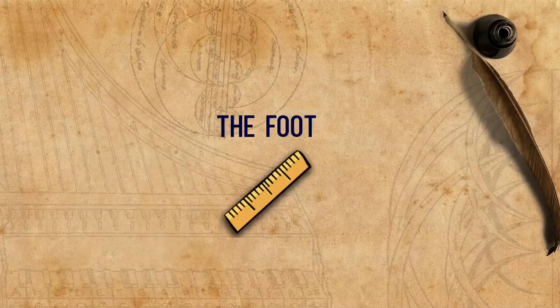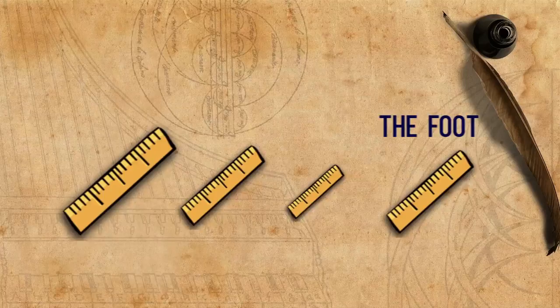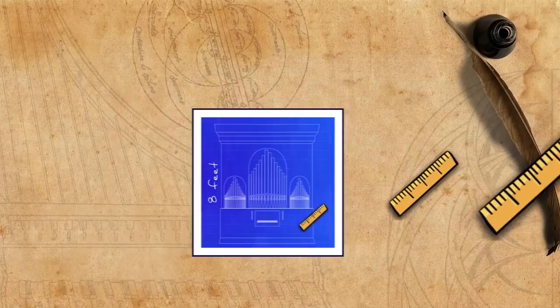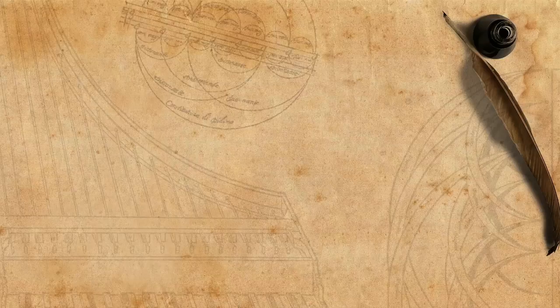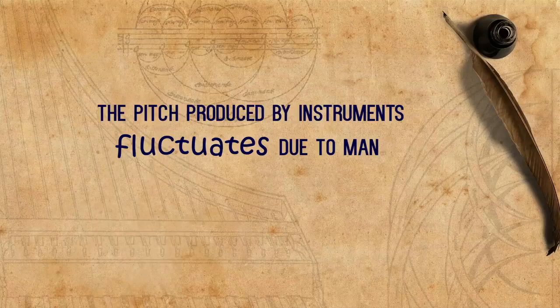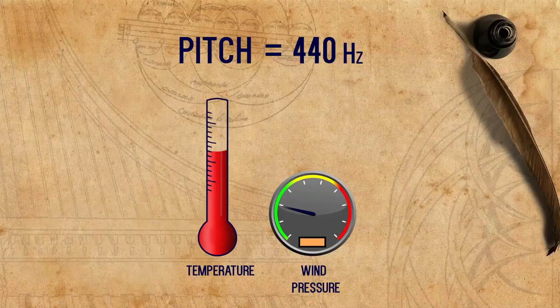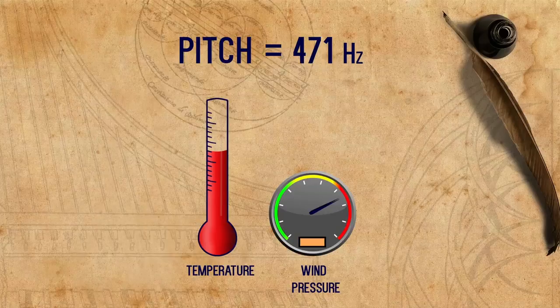Another unit of measure that was far from being standardized is the foot. It was different from city to city throughout Europe, and sometimes even within one city. This caused organs, for example, even if theoretically planned to be identical in their measurements, to be slightly different in size and therefore in pitch. But even if there had been a global measure for the foot or other measuring units, the pitch produced by instruments fluctuates due to many different factors. In organs, and in fact in most wind instruments, the pitch is highly affected by temperature and wind pressure.